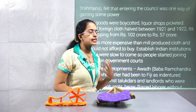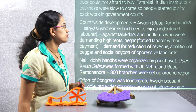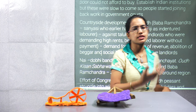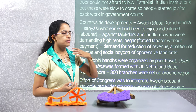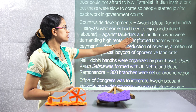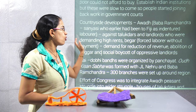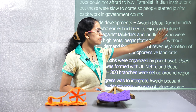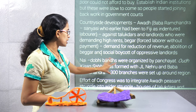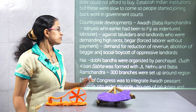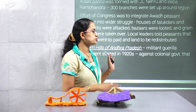Countryside developments were also very important. One specific development was in Awadh, where Baba Ram Chandra became a sanyasi — he had earlier been an indentured laborer in Fiji. When he returned, he had huge followers. He was against the taluqdars, the landlords, the high rents, and the practice of Begar — forced labor without payment. He organised the Awadh Kisan Sabha along with Jawaharlal Nehru. Nearly 300 branches were set up in that region in protest of these issues.